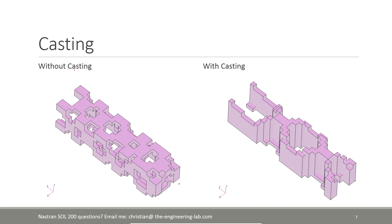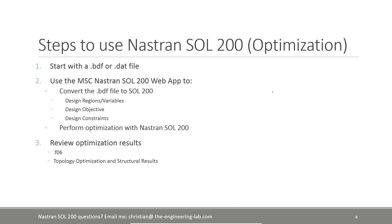Here's what it looks like without casting — you can see all the voids and it's very difficult to manufacture this part. On the right is the same topology solution with casting constraints, and you can see this design is more manufacturable. This is what I'll be covering in the next few moments.